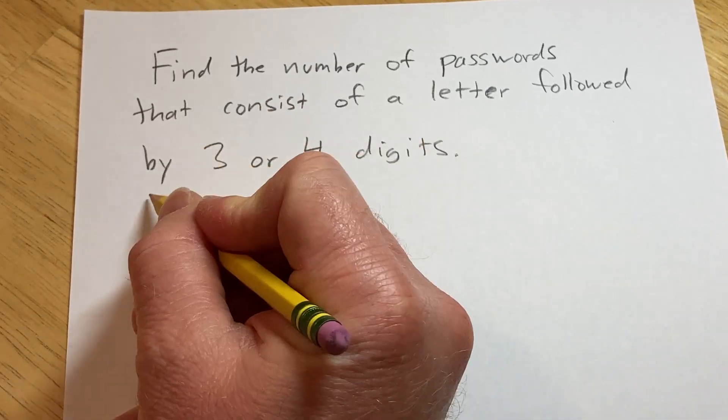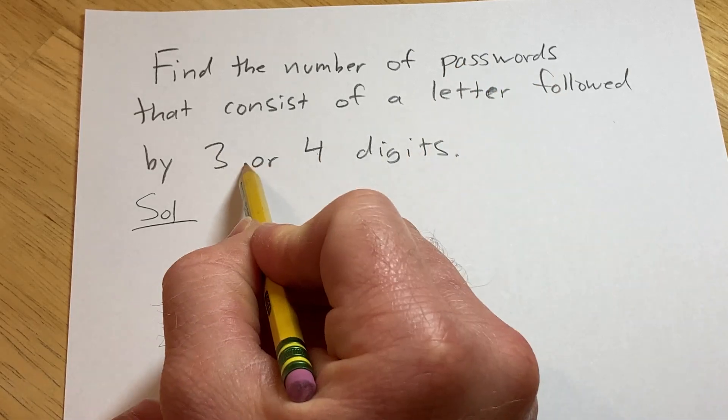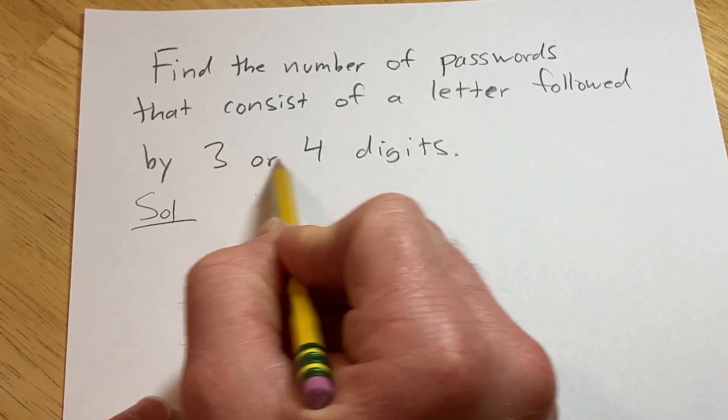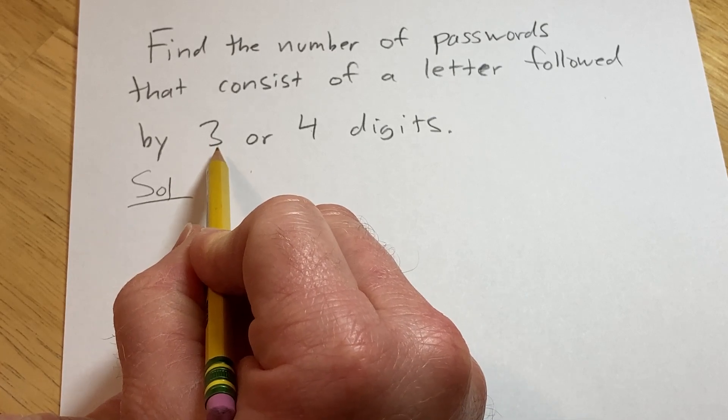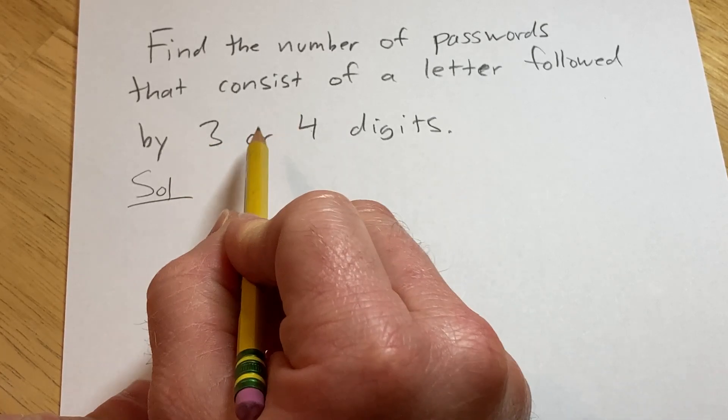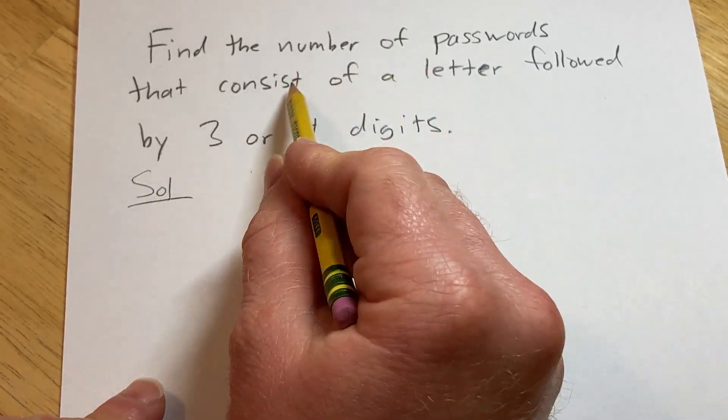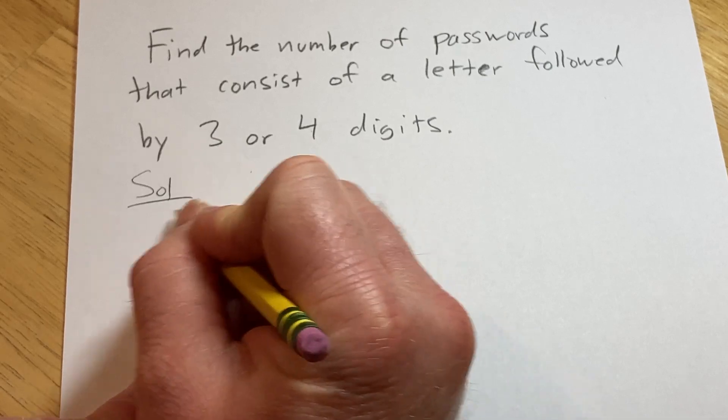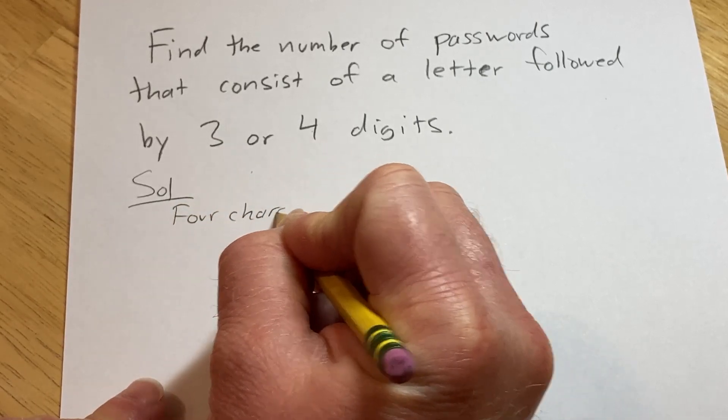Let's try to work through this. So the first one has to be a letter, that's the first character, and after that we have either three or four digits. So first let's focus on the number of passwords that have a total of four characters. That would be a letter and three digits, so four characters.